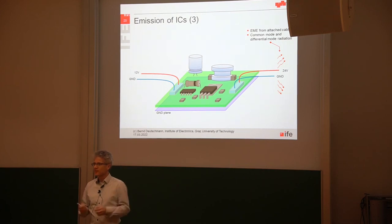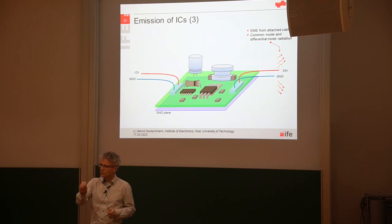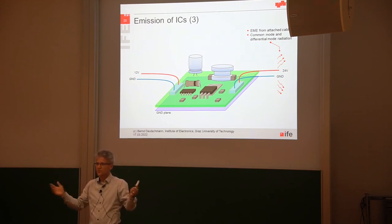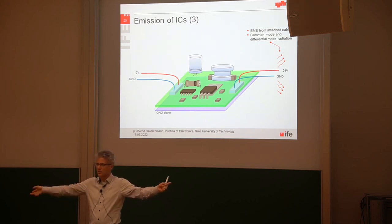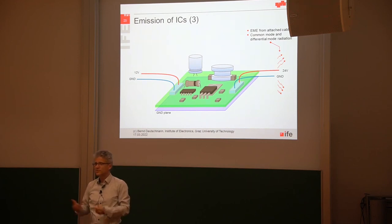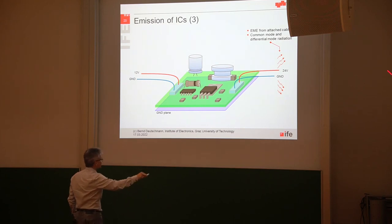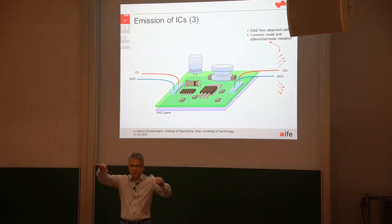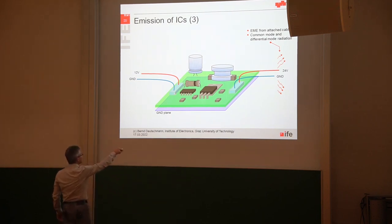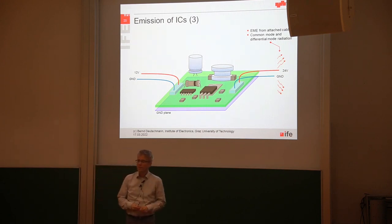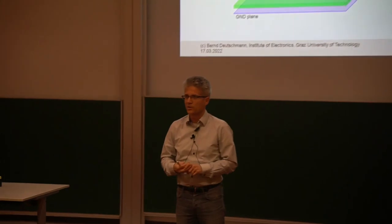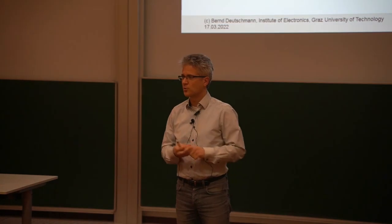Think of a voltage source connected between two cables. The cables are pretty long and not shielded. We have a voltage source driving a voltage drop between the two cables at a certain frequency, and this voltage drop is generating a current. Where does this current flow? This is our common mode current. It flows along the whole loop — out of the printed circuit board into the cable, then back via stray capacitances or whatever, over to the other cable and back to the source. This is one of the main issues because common mode currents are usually generating quite a lot of electromagnetic emission, and it is not easy to get rid of them.